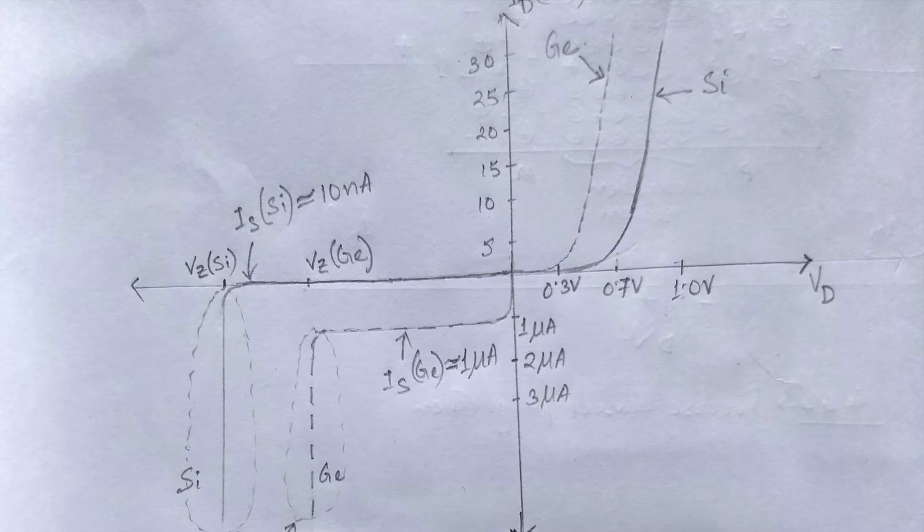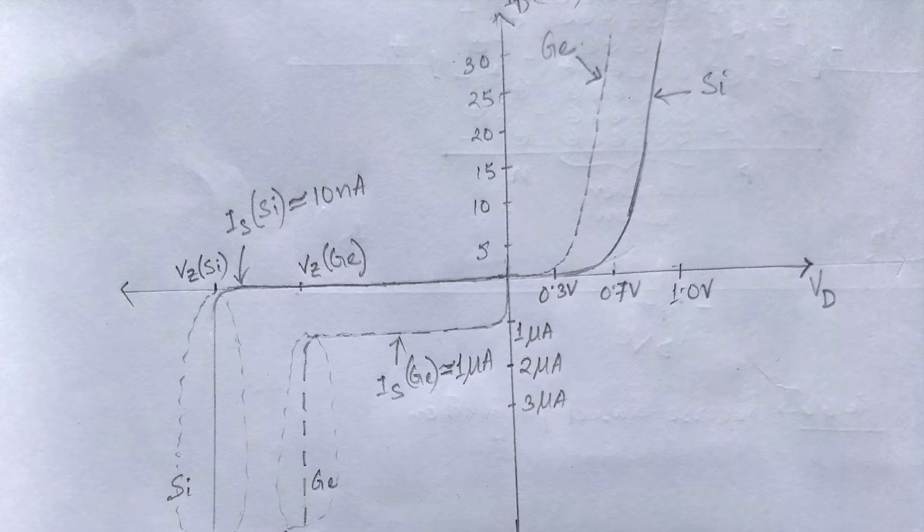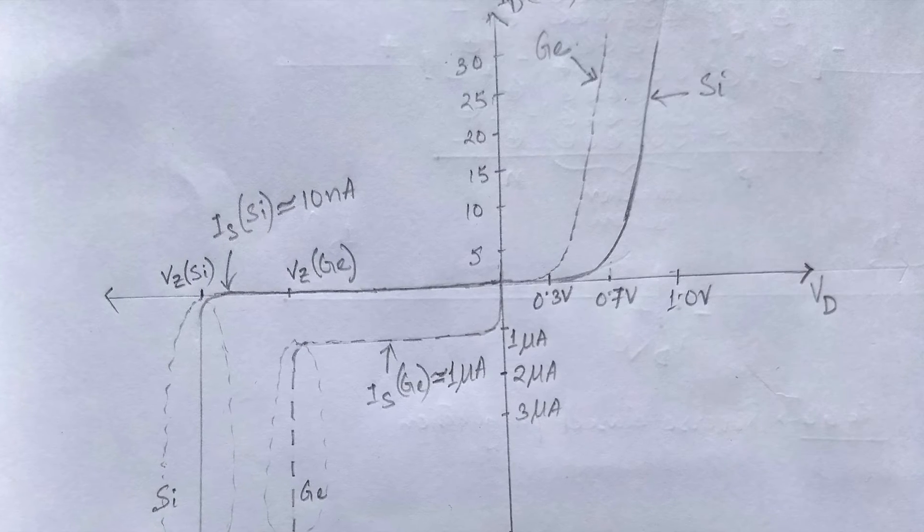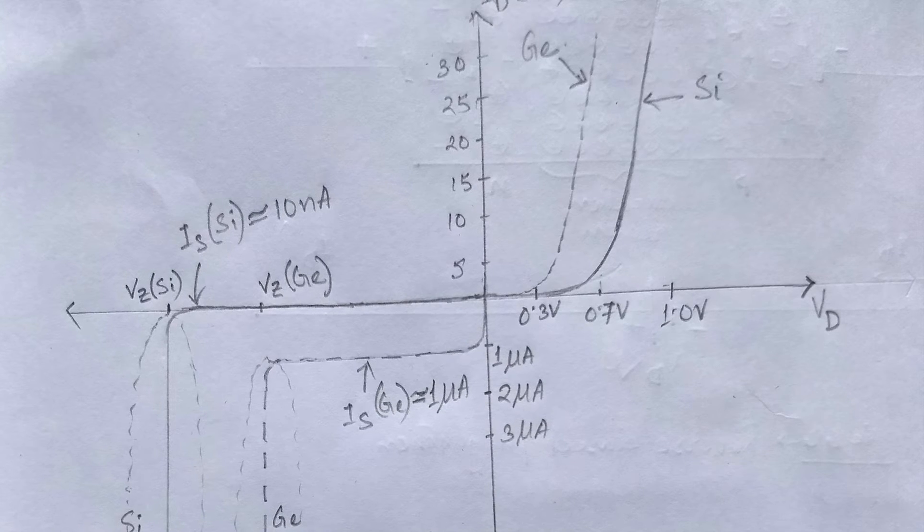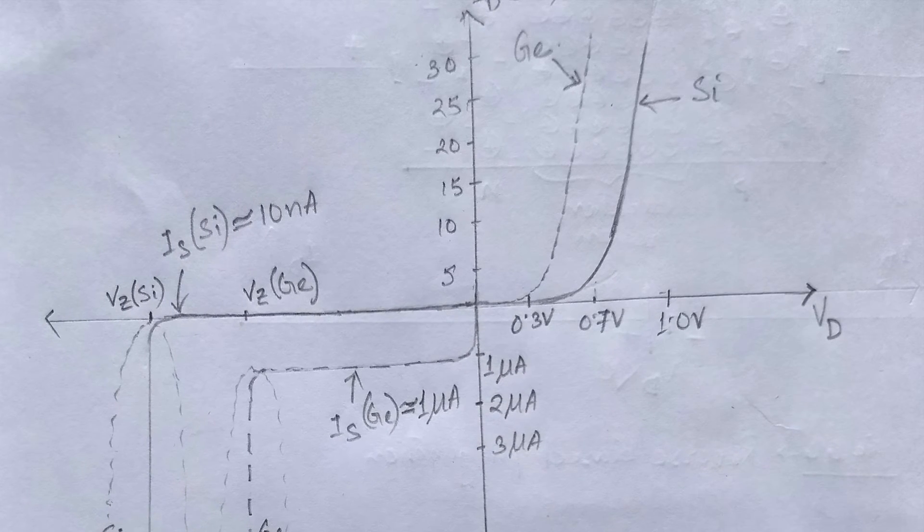From this figure we can observe that for forward voltage, germanium shows a sharper increase than silicon and at lower voltage. This is due to the eta factor that is equal to 1 for germanium and equal to 2 for silicon.